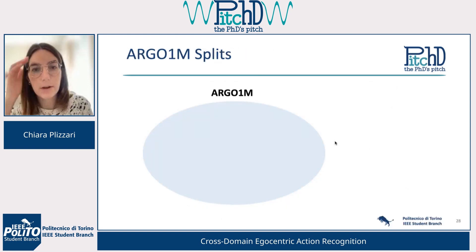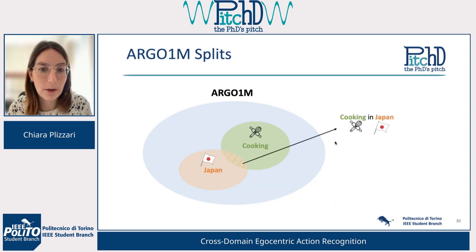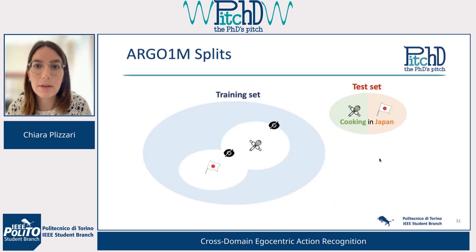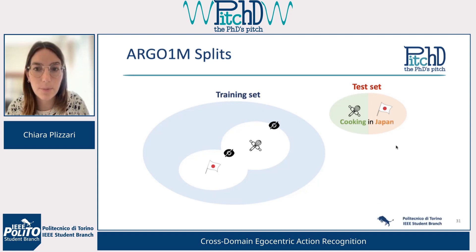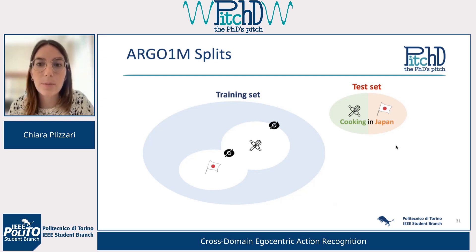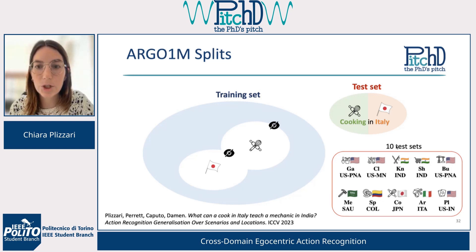How do we study this problem? We start from our dataset and study a generalization problem. We take one scenario and one location — for example, cooking in Japan — and take the intersection of all examples recorded in that combination as the test set. We remove all samples containing either that scenario or that location from the training set, so the network must generalize to unseen scenarios and locations. With this procedure we also obtain 10 different splits derived from combinations of different scenarios and locations.